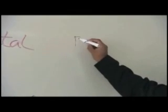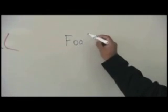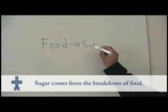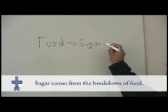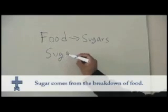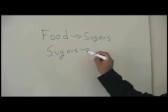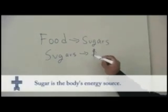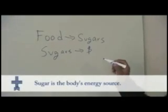So this is what happens. The food that we eat gets transformed into sugars. Our sugars is basically our currency. That is our unit of energy.